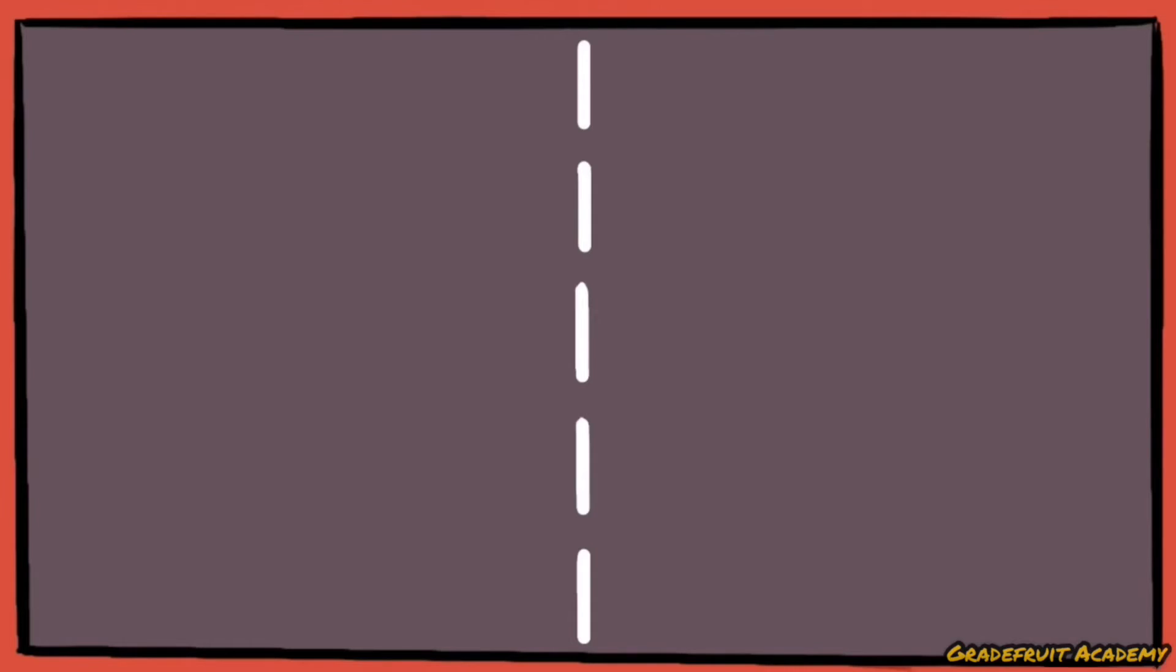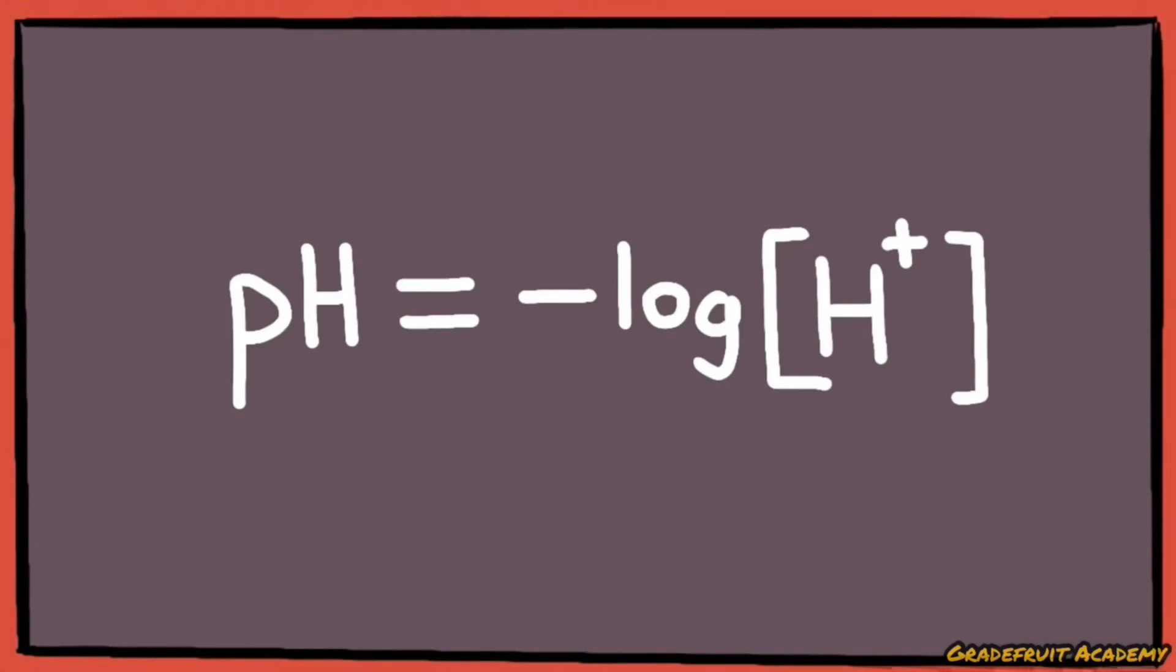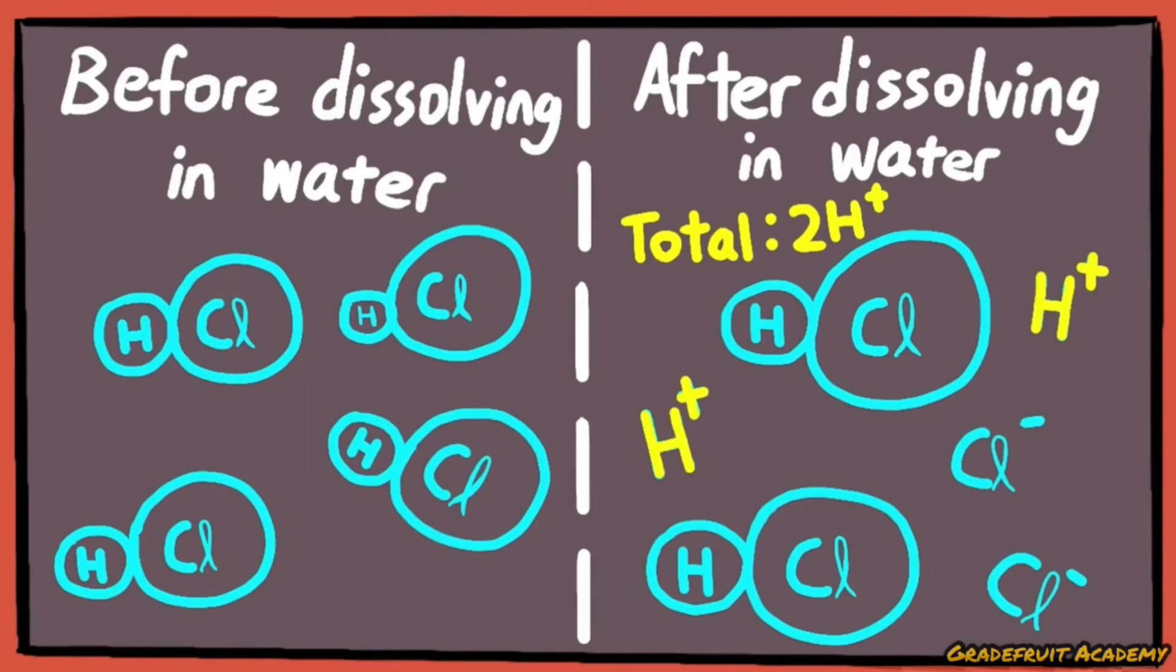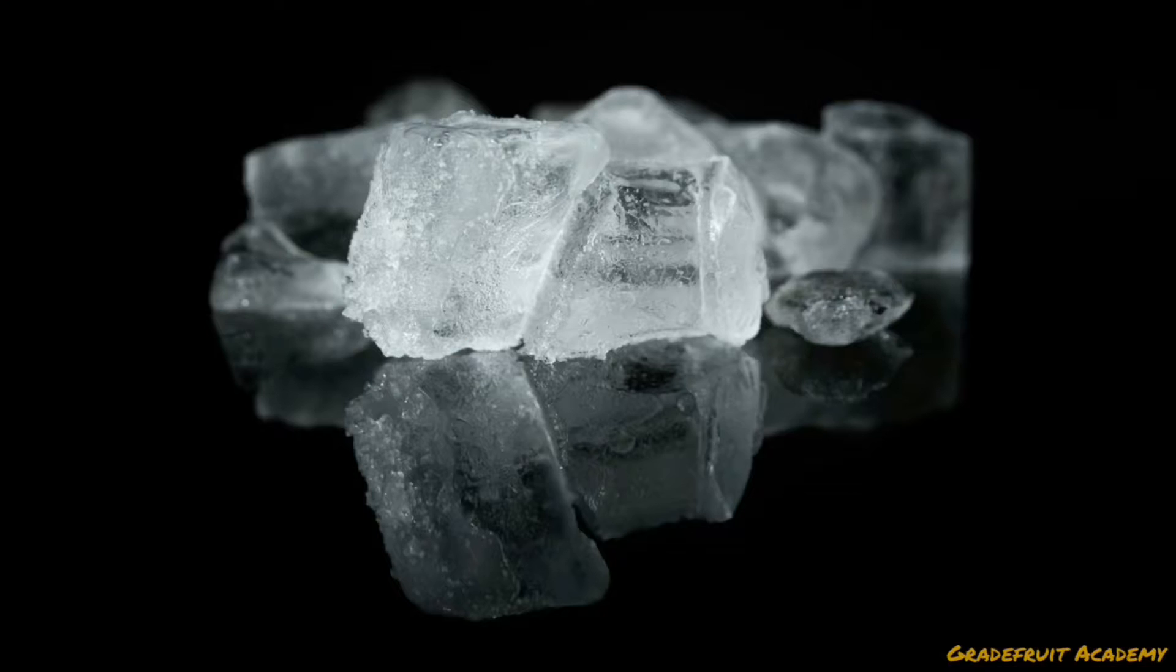That's because weak acids and bases only ionize partially in water. So the H+ here in the formula reflects the amount of ionized H+, and not the amount of hydrogen present in the acid molecule before it is dissolved in water. Hence, we need to find the actual amount of H+ that is ionized by using a method called the ICE table.